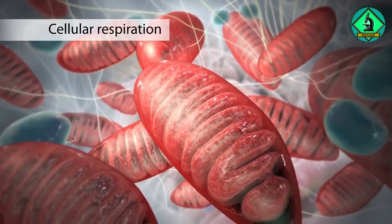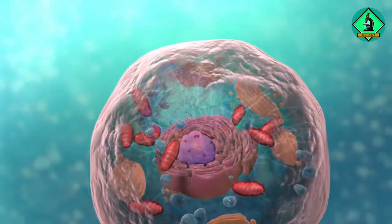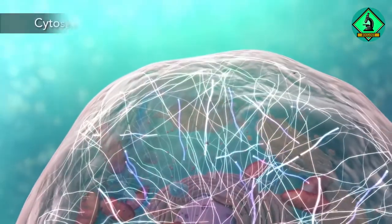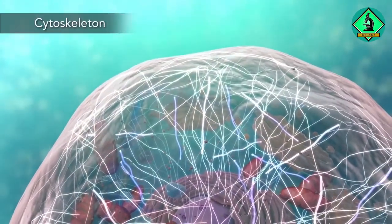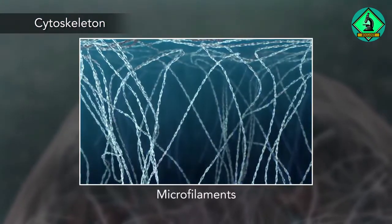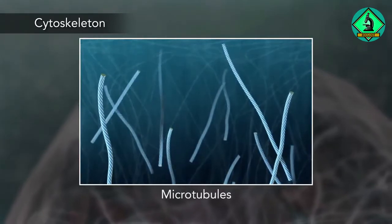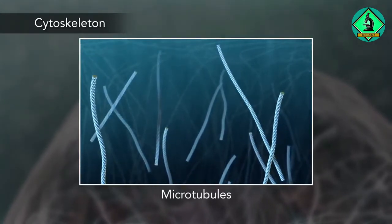Meanwhile, the cell maintains its shape through a cytoskeleton. The cytoskeleton includes the thread-like microfilaments, which are made of protein, and microtubules, which are thin hollow tubes.